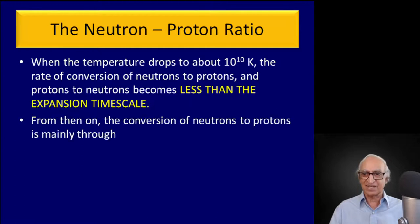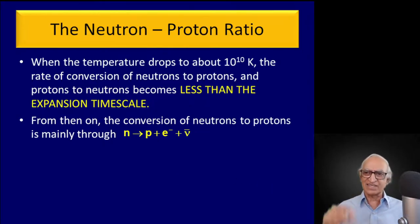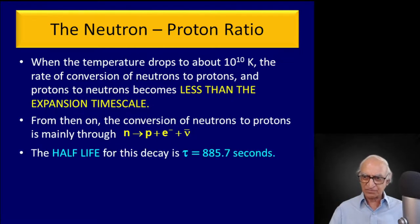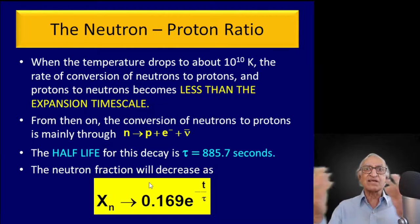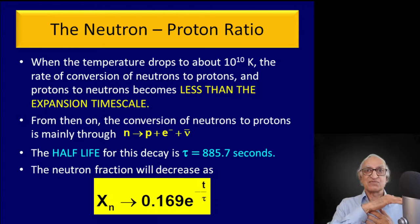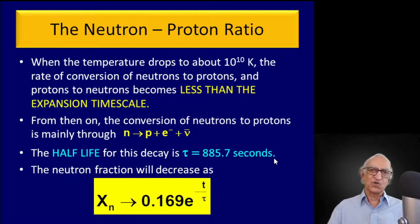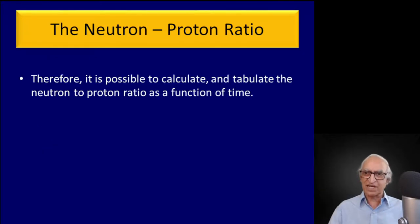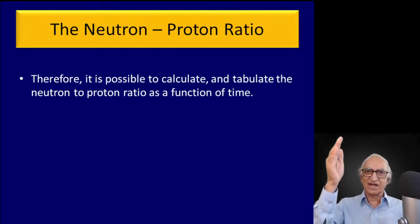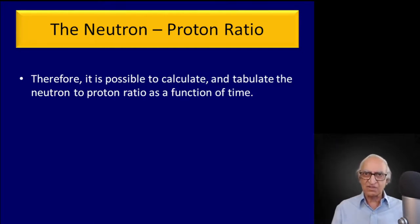Since protons cannot convert to neutrons (being less massive), all that can happen is that neutrons decay according to N(t) = N₀ exp(−t/τ) where τ ≈ 1,000 seconds. So I can make a table as a function of time: what is the fraction of neutrons, what is the fraction of protons. Although protons and neutrons can combine to form deuterons, one must remember that deuterons will also break up in collisions, so you have to wait until the temperature drops below the binding energy of the deuterium nucleus.